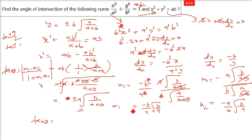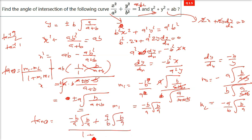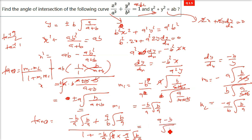The expression must be inside a modulus — take only the positive value. Writing out m1 - m2 and 1 + m1·m2 and simplifying — I will leave the detailed algebra to you — tan θ comes out as (a - b)/√(ab). Therefore θ = tan⁻¹[(a - b)/√(ab)].